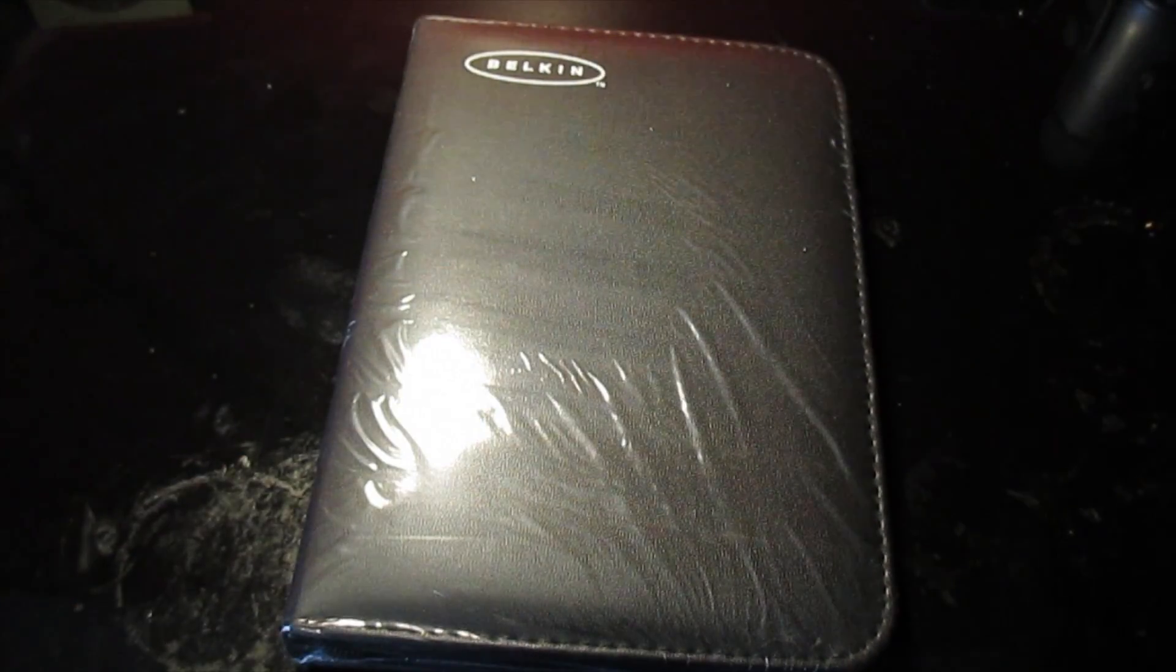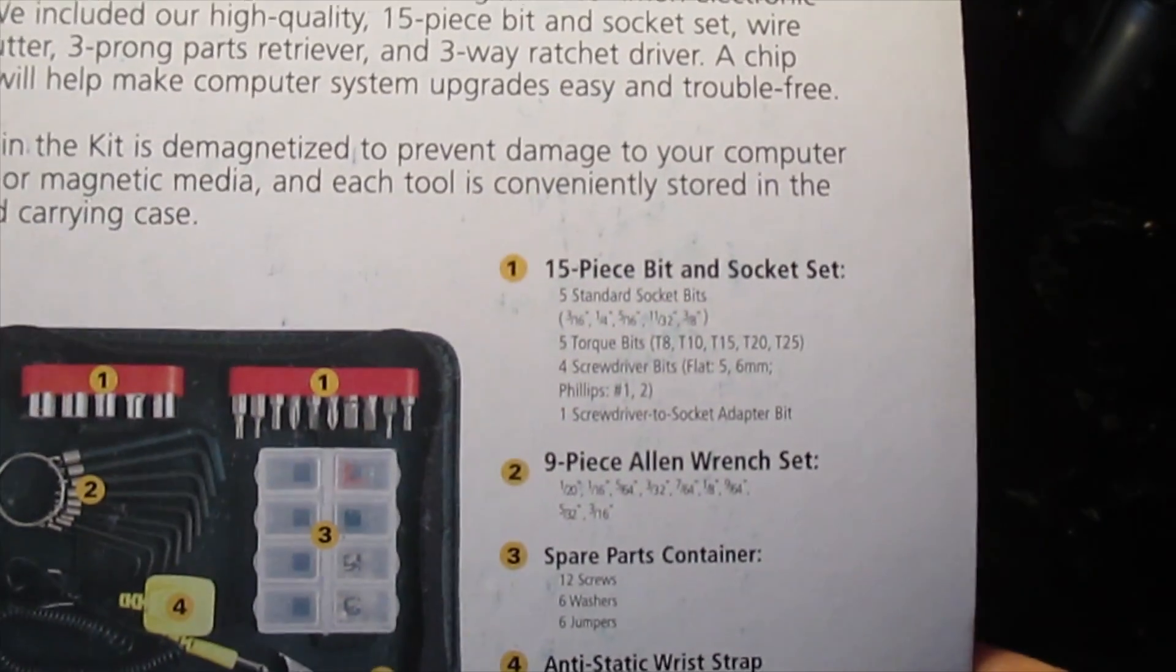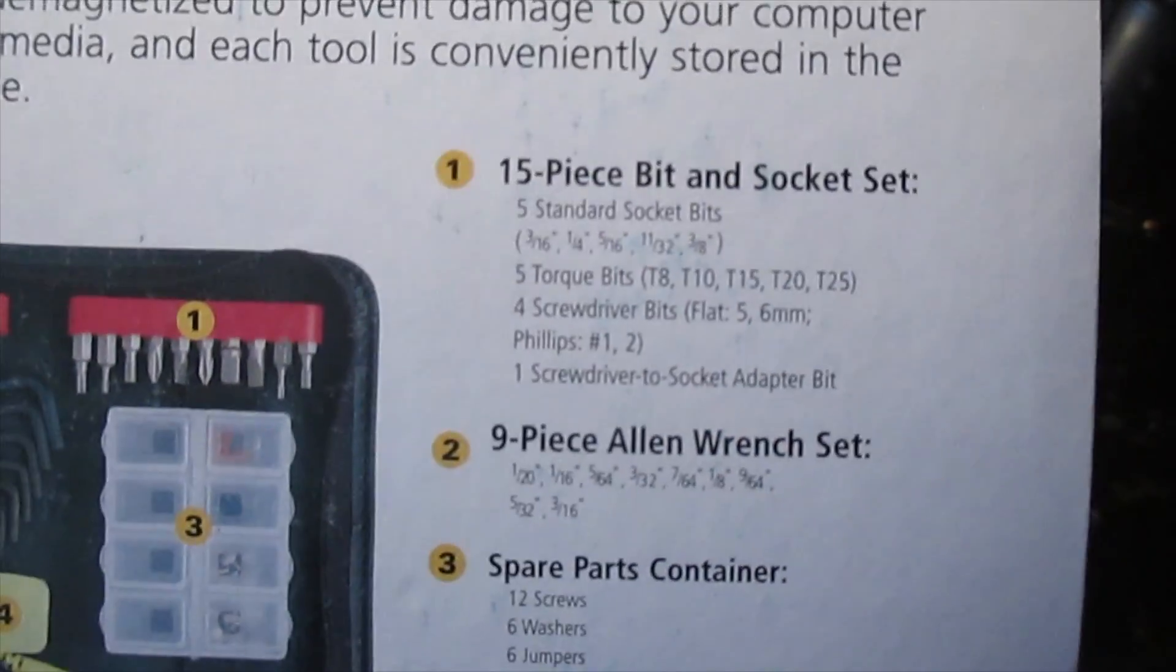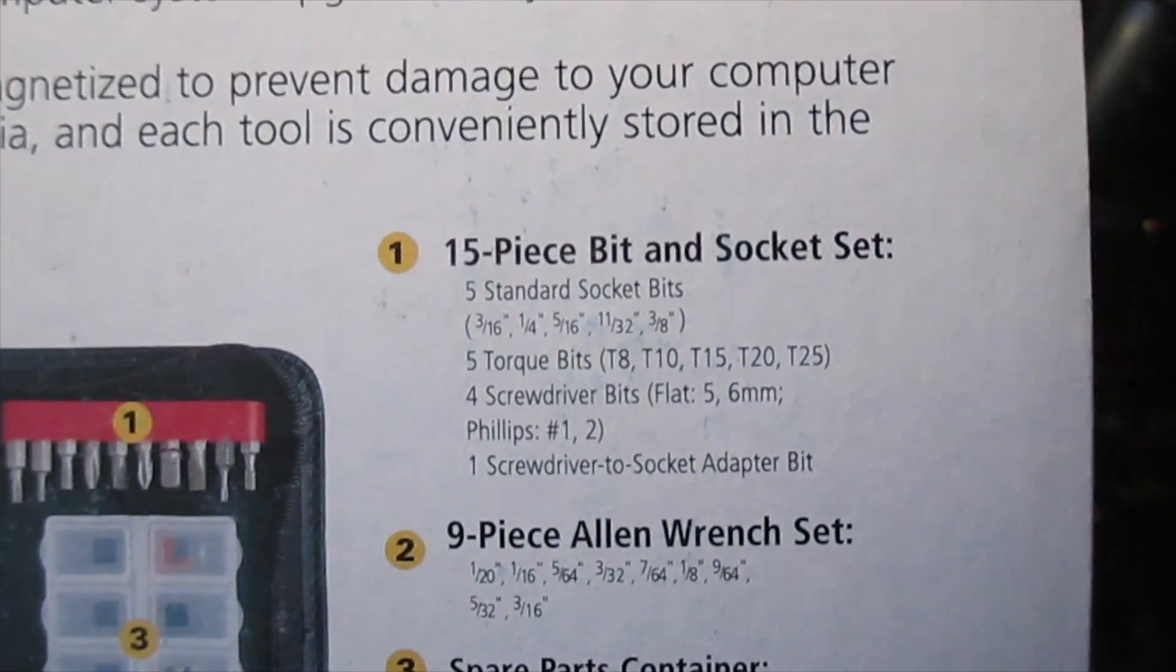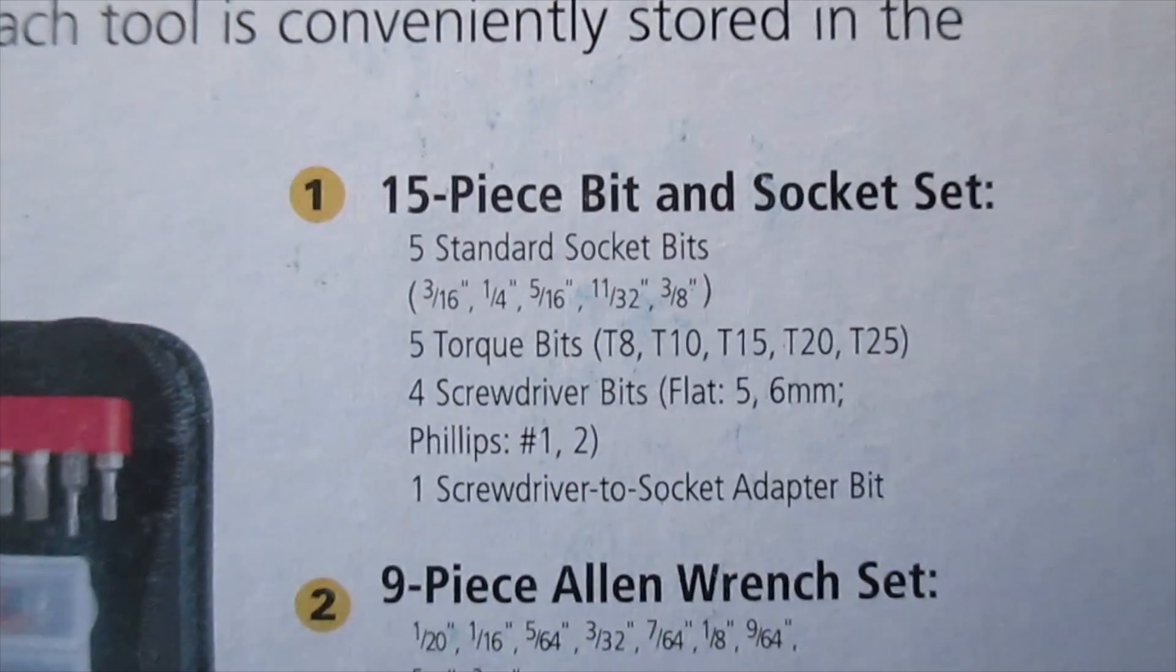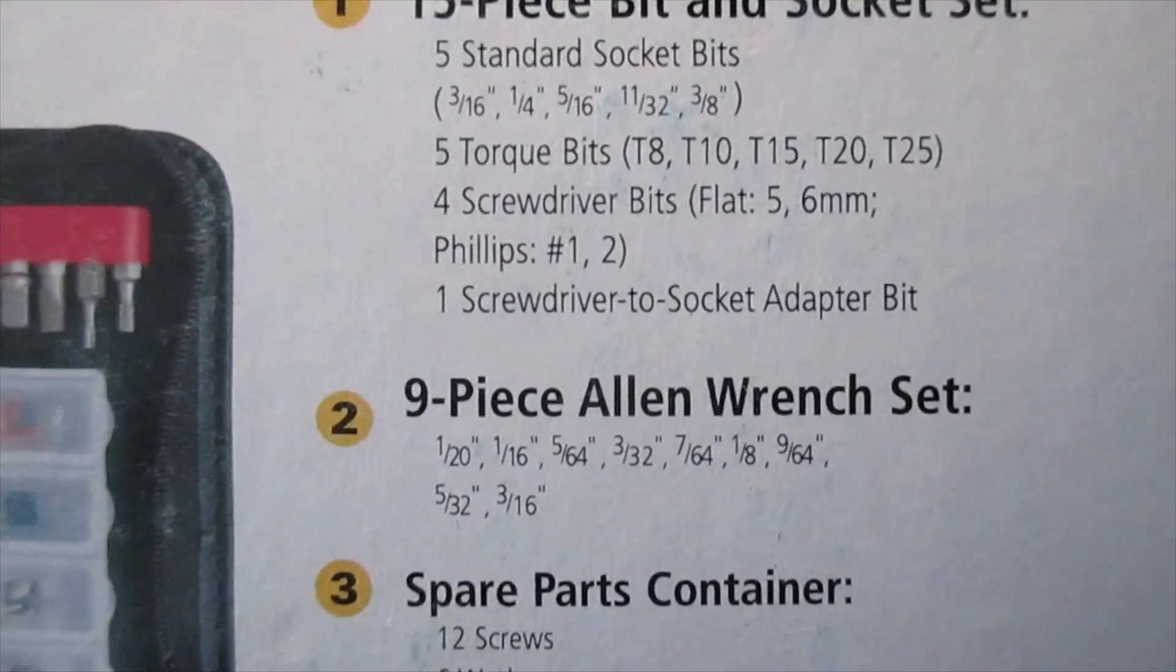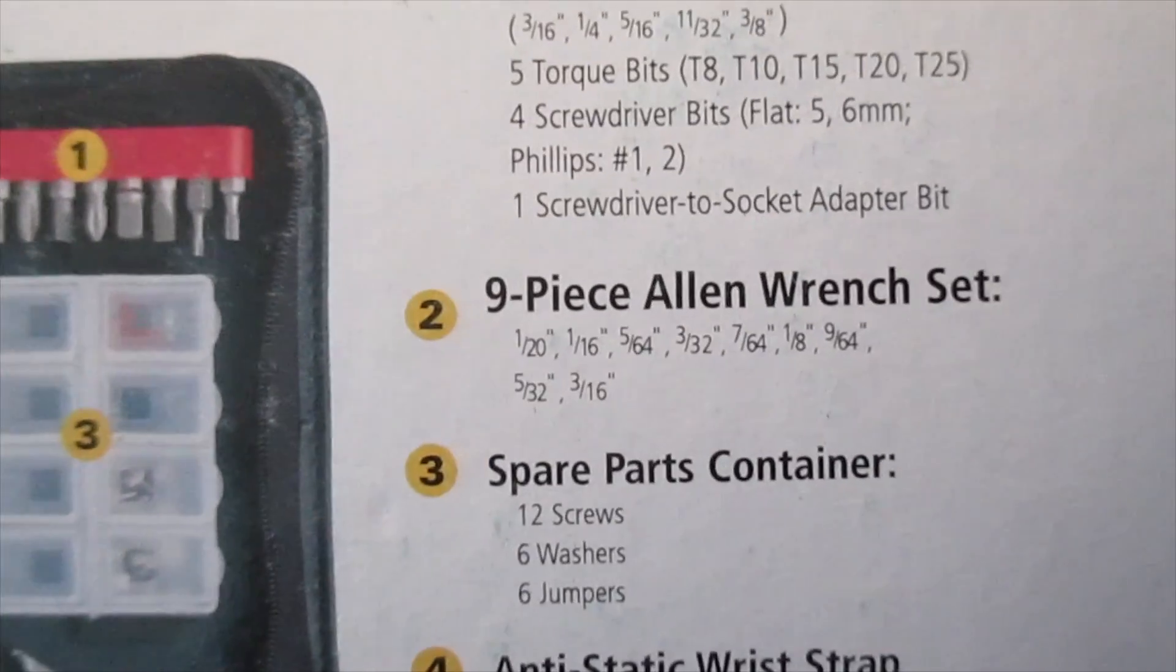So I probably will end up magnetizing these screwdrivers. But it has a 15 piece bit and socket set, T8, T10, T15, T20, T25. Five standard sockets, 3-16, 1-4, 5-16, 11-32, and 3-8. Four screwdriver bits, there's a flat 5 and 6 millimeter and a Philips number one and number two. And one screwdriver which is socket adapter bit.